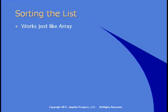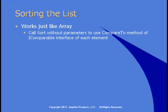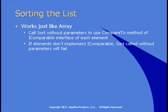Sorting a list works just like an array. Since the list contains an array internally, what's the difference? You call sort without parameters to use the compareTo method of the IComparable interface of each element in the list, and if the elements don't implement IComparable, sort called without parameters will fail.